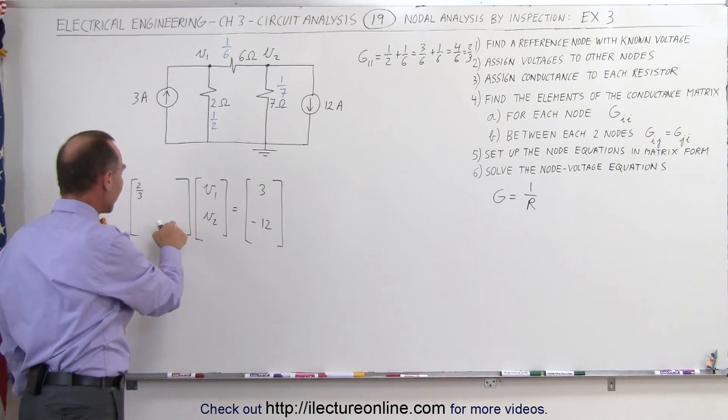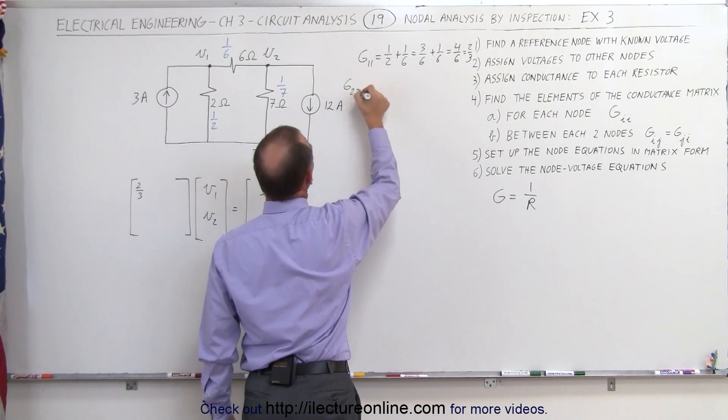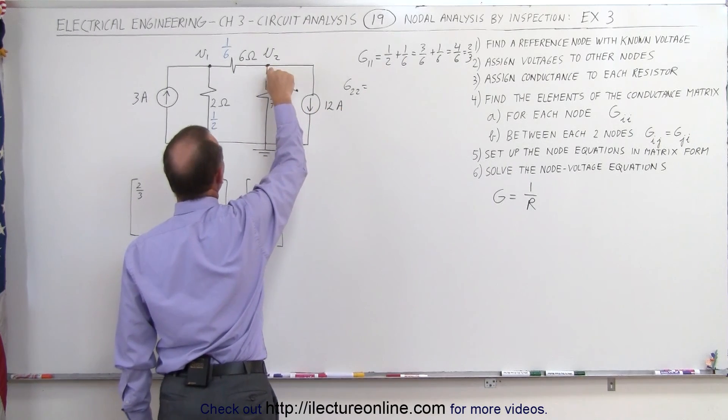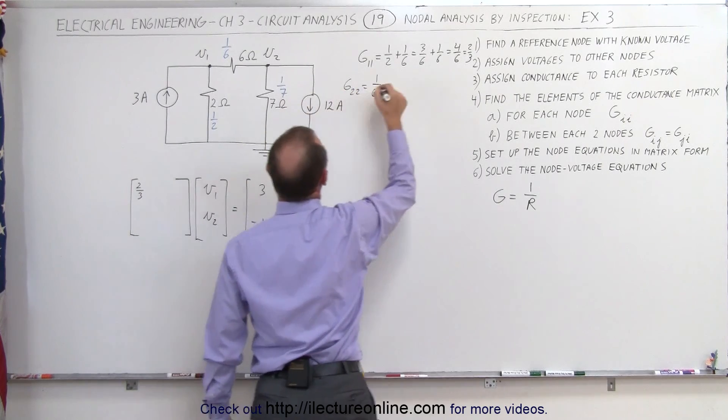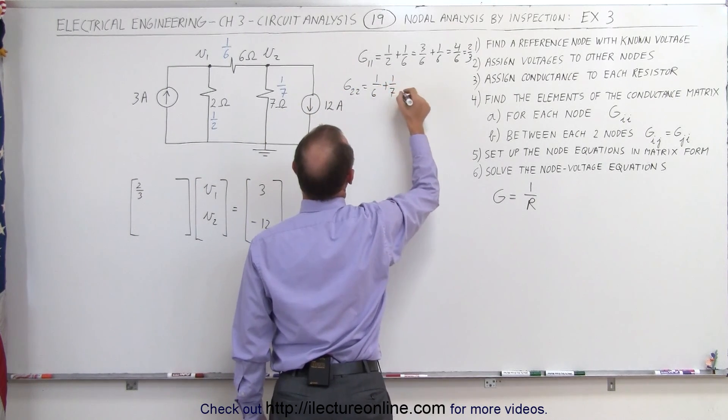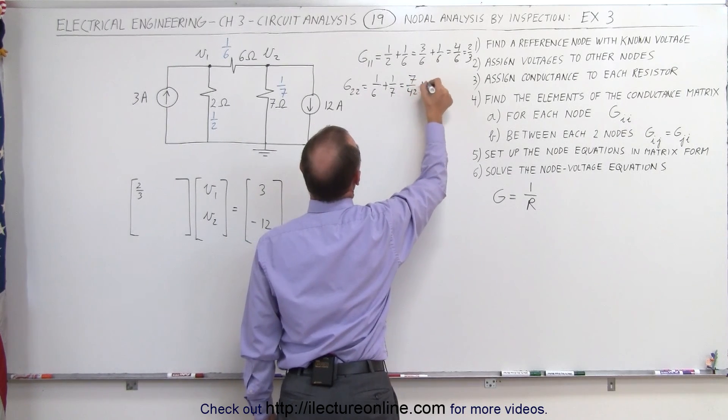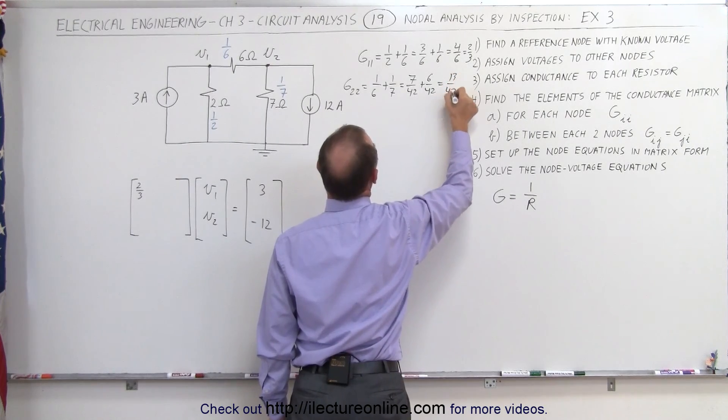To find this element right here, because we do the diagonal elements first, that's G22, which is equal to all the conductances directly connected to the second node, that would be 1 over 6 and 1 over 7. The common denominator is 42, that would be 7 over 42 plus 6 over 42, which is 13 over 42.